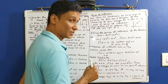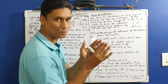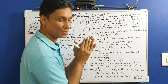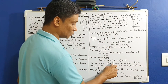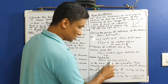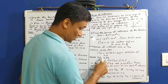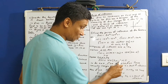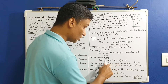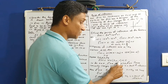Now suppose 0 less than x less than 2 by 3. f double dash x is again 12x into 3x minus 2. In this interval, if x is positive then 12x is positive, but 3x minus 2 is negative — so the whole expression is negative. Therefore f double dash x is less than 0 for x in (0, 2/3).